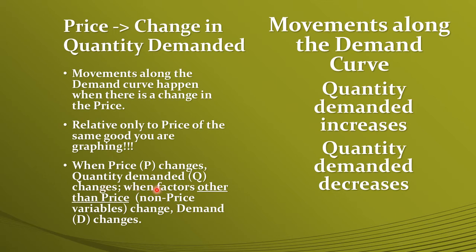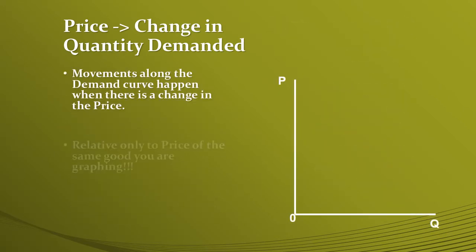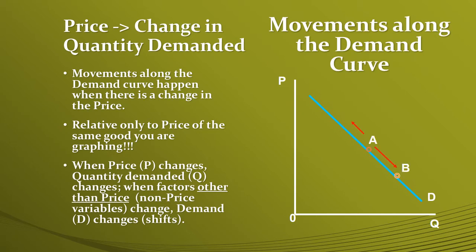When factors other than price — also called non-price variables — change, then demand itself will change. A change in price means we move along the demand curve, from an original price and quantity demanded to a different price: a lower price gives a larger quantity demanded, a higher price gives a smaller quantity demanded. If we're talking about other factors, then all of the demand — the entire curve — will move.